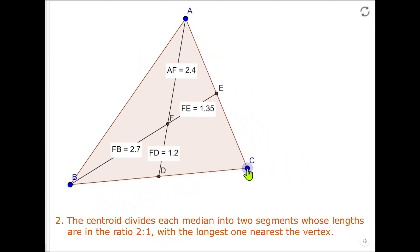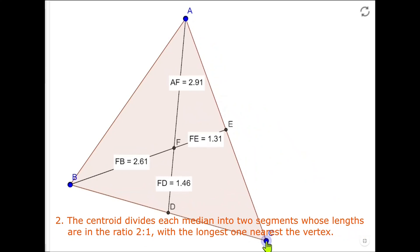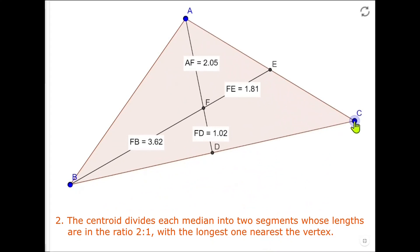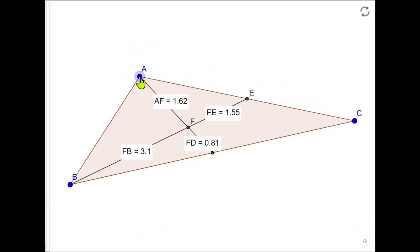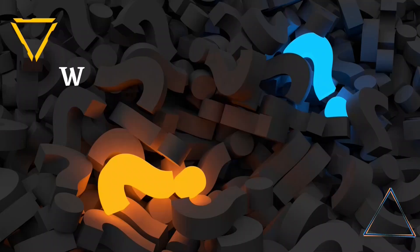The second fact is the centroid is exactly two-thirds of the way along each median. Let me put it another way: the centroid divides each median into two segments whose lengths are in the ratio 2:1, with the longest one nearest the vertex. The respective lengths are shown on the medians in the figure.